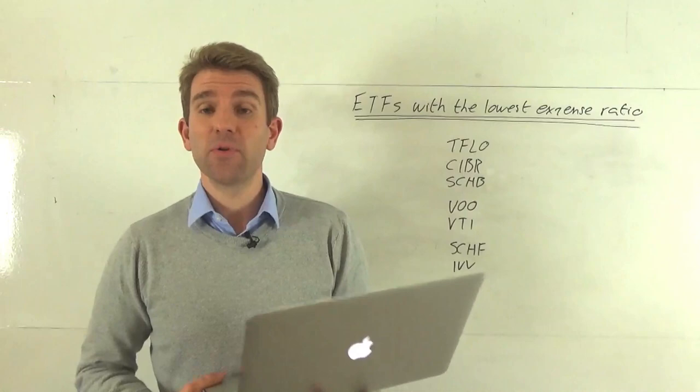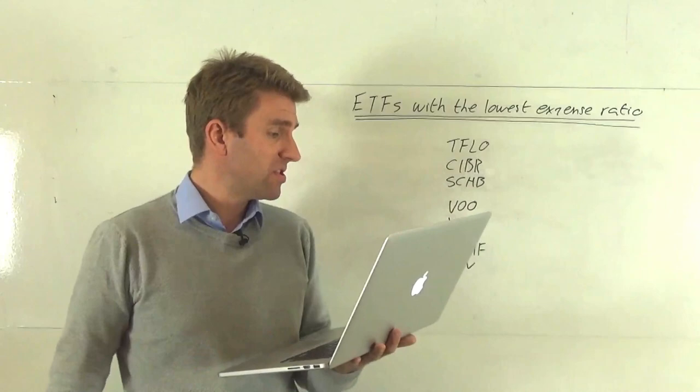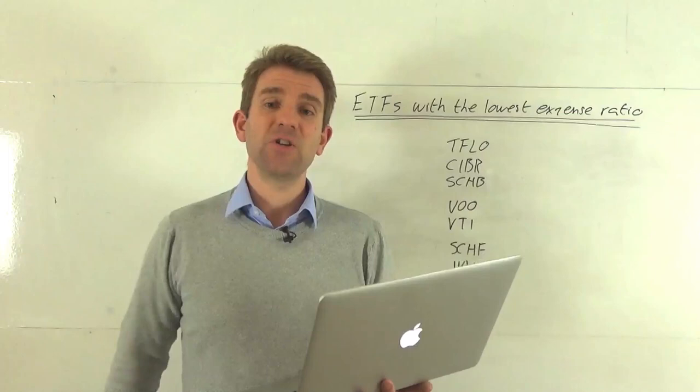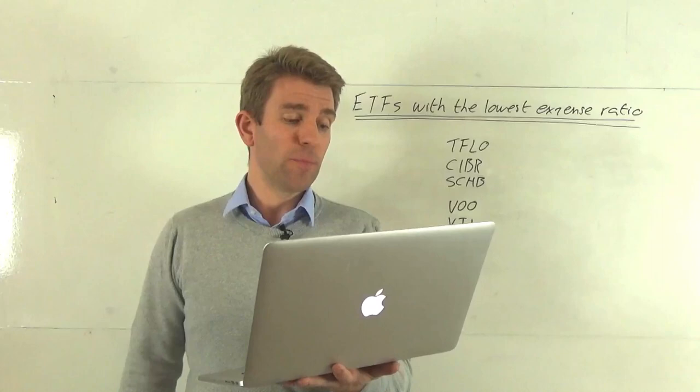And the final one we've got is IVV, which is the iShares core S&P 500, tracks the performance of the S&P 500, assets under management on this 157 billion, three-month volume 3.8, dividend yield 1.84%, and expense ratio 0.04%. So very similar to a lot of the others on here.